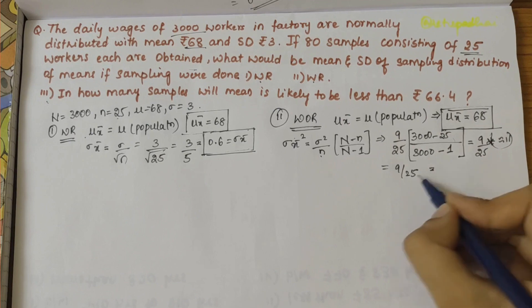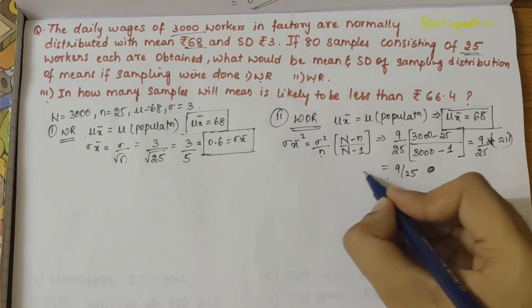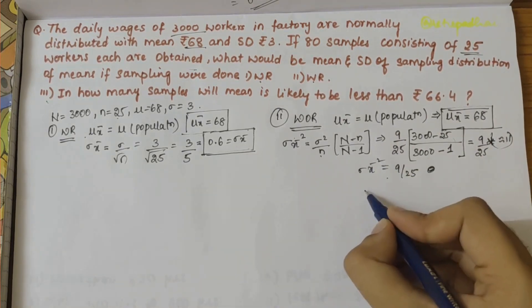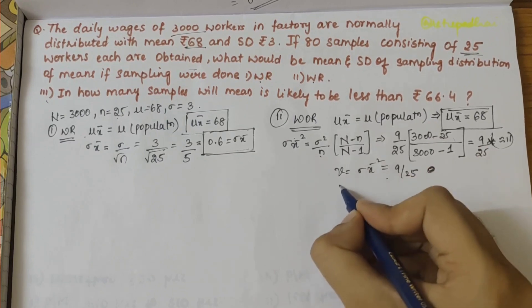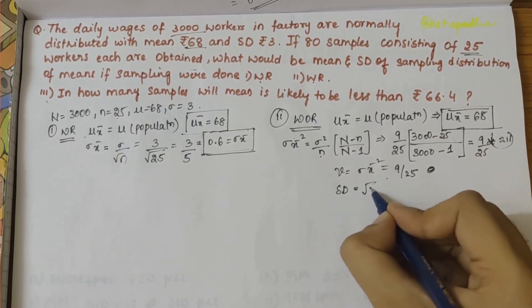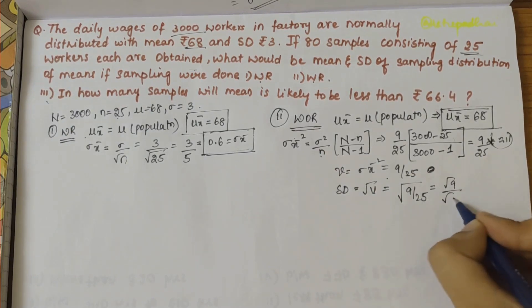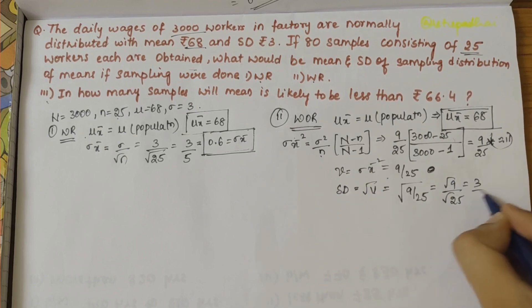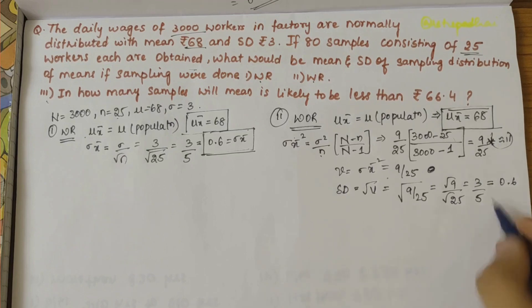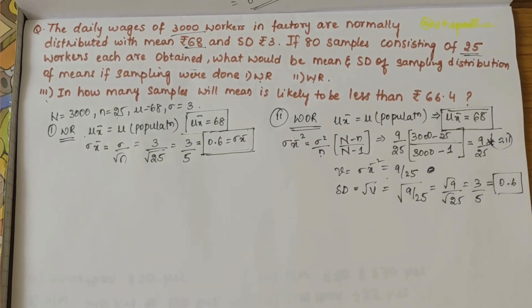So it will be 9/25, that is σ² x-bar. Now finding standard deviation, that is under root of variance. So under root of this entire thing, 9/25. Under root 9 / under root 25, this is again equal to 0.6. So we have found out the mean and variance of sample without replacement part.